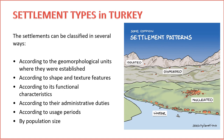5. Usage Periods. Settlements can be categorized by the periods during which they were established and thrived. This historical perspective helps us understand the evolution and continuity of human settlements. 6. Population Size. Perhaps one of the most straightforward classifications is based on population size. Settlements range from small hamlets and villages to sprawling metropolises, each with its unique dynamics. The classification of settlements is a multidimensional lens through which we can study human societies and their interaction with the environment, giving us a richer understanding of the diversity and complexity of human settlements.